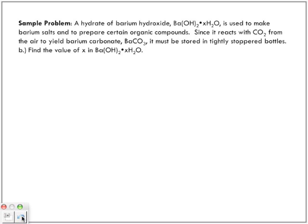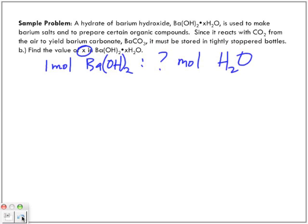Here we have the same sample problem. Now we are trying to find the value of x. What we want to do is find out in one mole of barium hydroxide, what is the ratio of moles of water. We want to find out the actual number of moles. We're given the mass, we can find the molar mass. As long as we have mass and the molar mass, we can find out the number of moles we have of each.